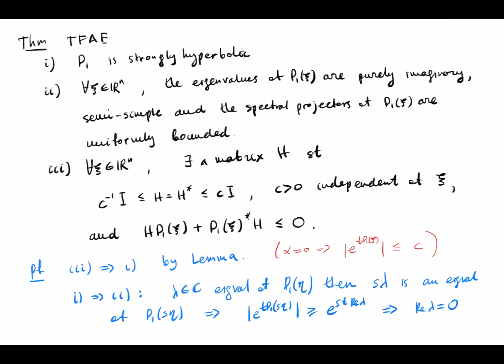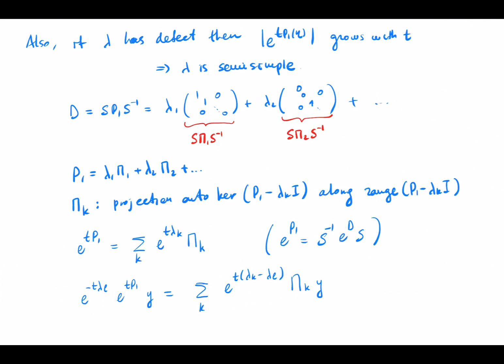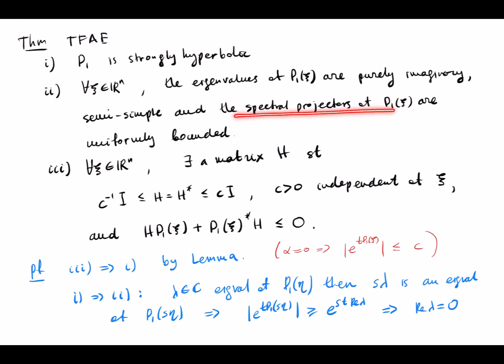Now we want to prove one implying two. To see that the eigenvalues are purely imaginary we apply the same scaling argument: because it is a homogeneous polynomial, we can scale it to get a large norm if the real part is nonzero, so the real part is zero. The semi-simple part is similar: if any eigenvalue has defect, the exponential grows polynomially with t. So all eigenvalues must be semi-simple. What remains is to prove the spectral projectors are uniformly bounded.